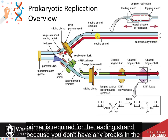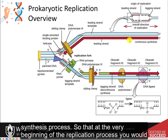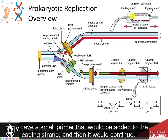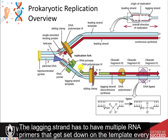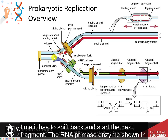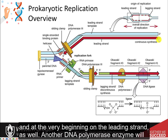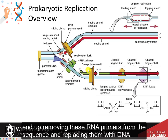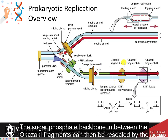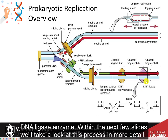Only one primer is required for the leading strand because there are no breaks in the synthesis process. At the very beginning of the replication process, a small primer would be added to the leading strand, and then it would continue. The lagging strand has to have multiple RNA primers that get set down on the template every time it has to shift back and start the next fragment. The RNA primase enzyme, shown in green, mediates this process of placing the RNA primers down on the lagging strand and, at the very beginning, on the leading strand as well. Another DNA polymerase enzyme will end up removing these RNA primers from the sequence and replacing them with DNA. The sugar phosphate backbone in between the Okazaki fragments can then be resealed by the DNA ligase enzyme.